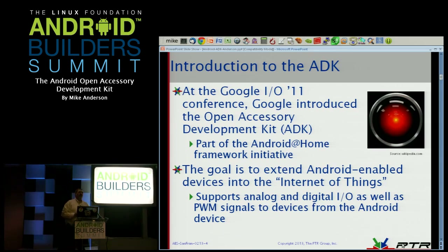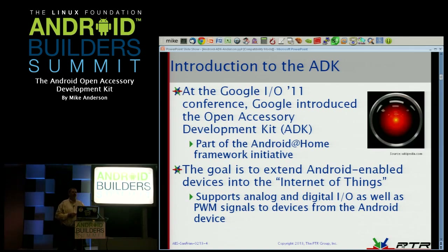What we're seeing now is a big push to eliminate IR remote controls. The consumer electronics industry is pushing to do that, moving over to an RF-based type of controller. Your Android phone would then also be enabled with that type of radio so that you could, from your Android device, basically control everything inside of the house. That's the goal — it's really Android enablement of the Internet of Things.